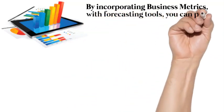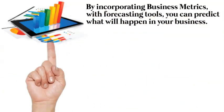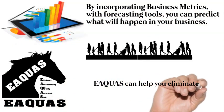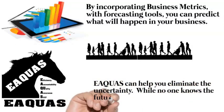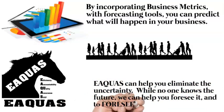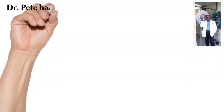By incorporating business metrics with forecasting tools, you can predict what will happen in your business. Equus can help you eliminate the uncertainty. While no one knows the future, we can help you foresee it, and to foresee is to rule.